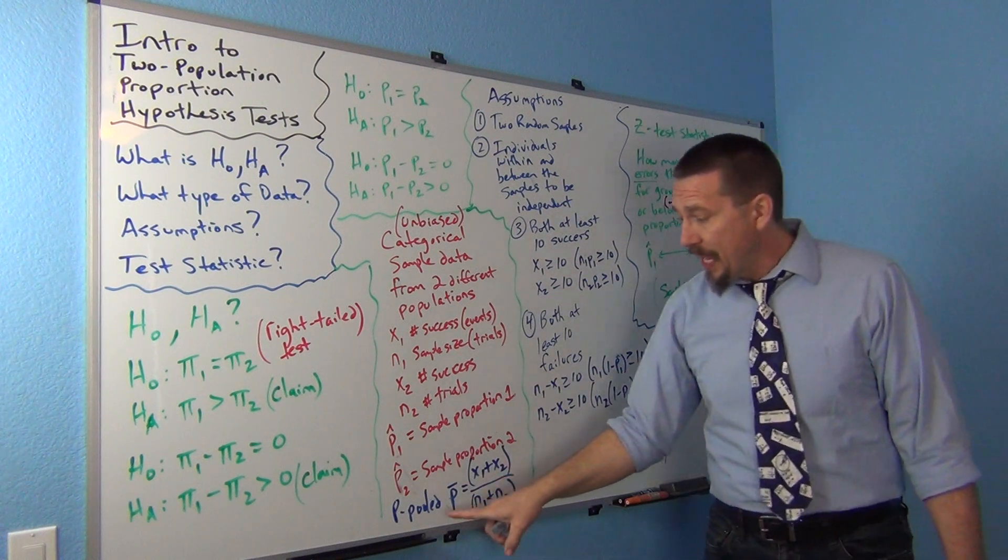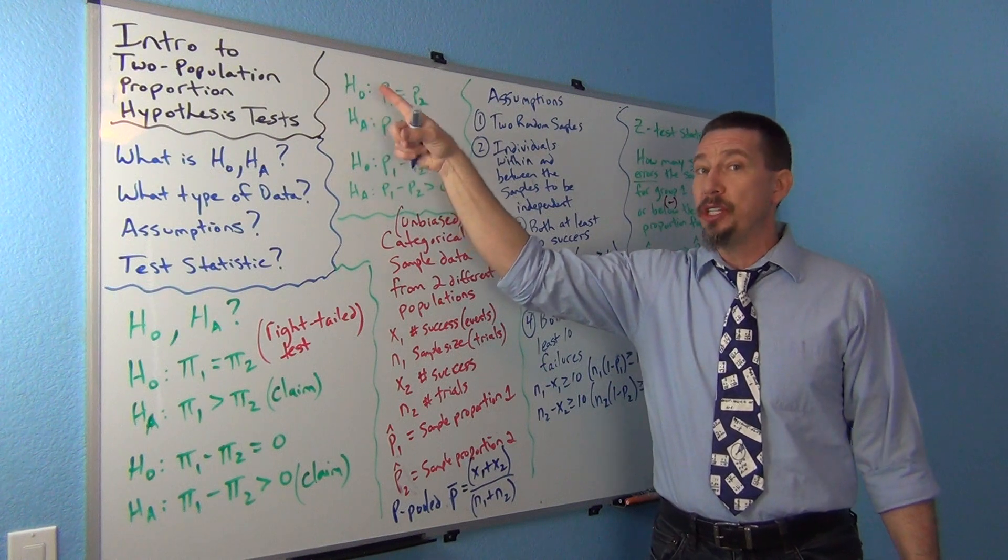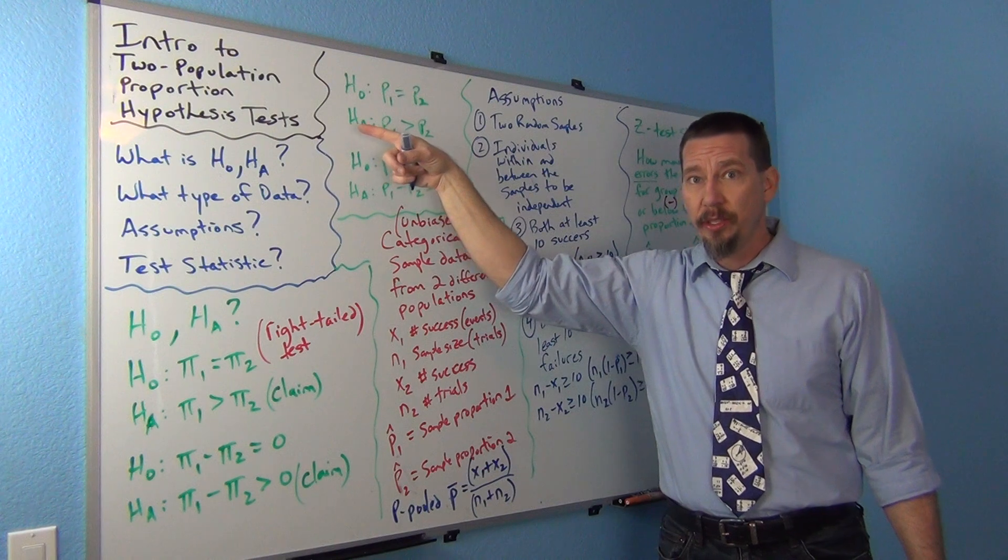Now, one thing to keep in mind, guys, in a computer program, if they ask you to pool, it's okay to pool on a two-population proportion hypothesis test. It's not okay to pool on a two-population confidence interval.